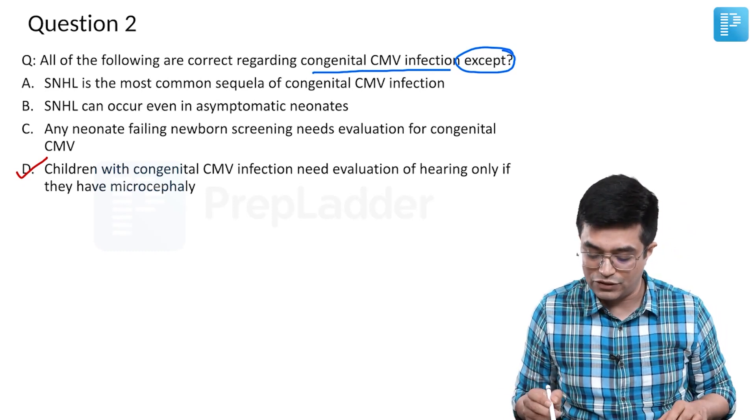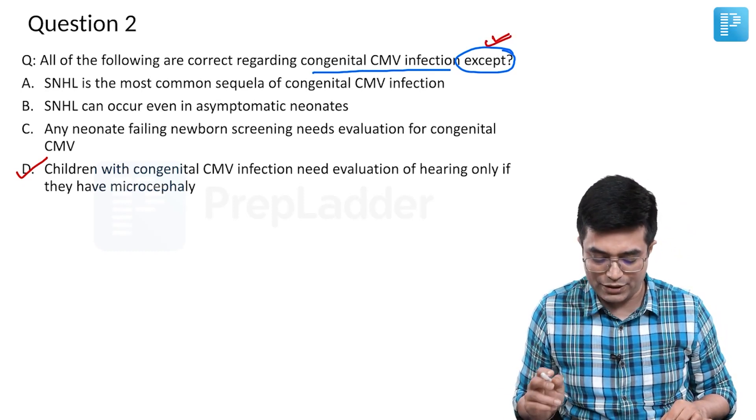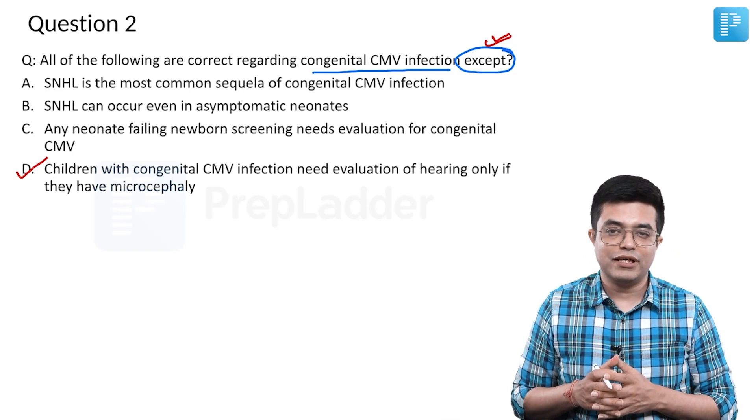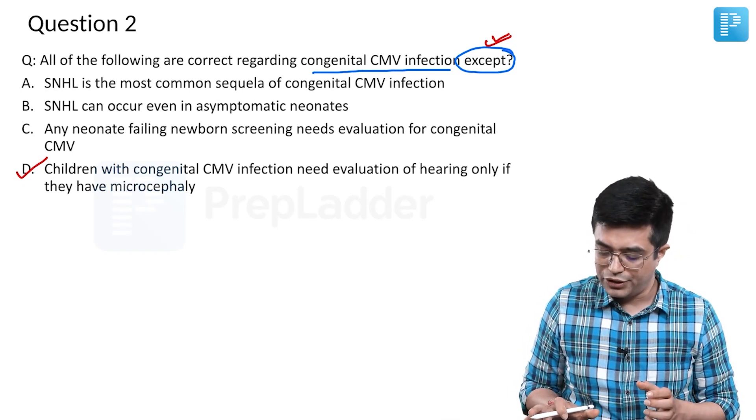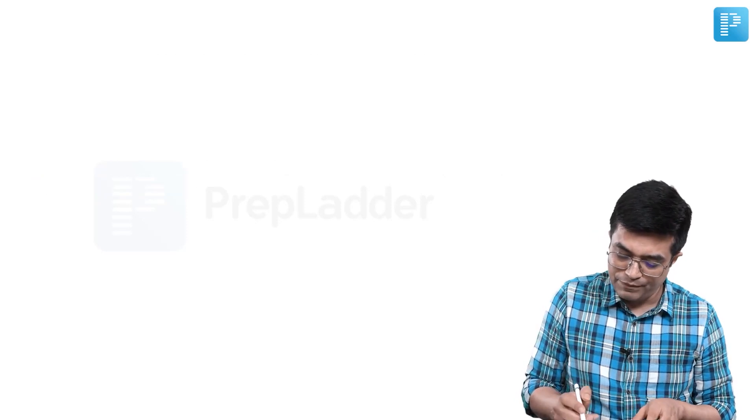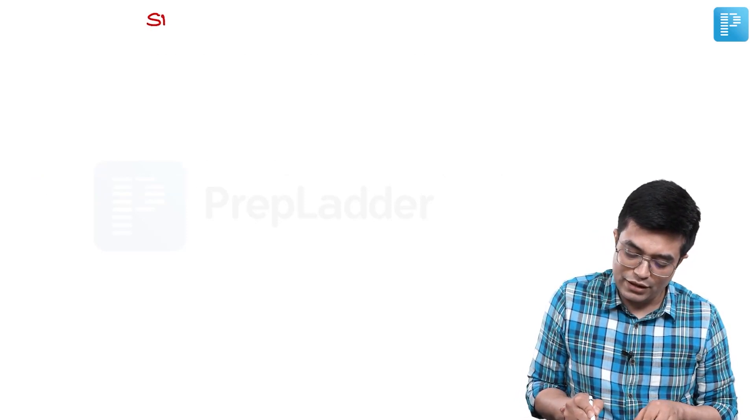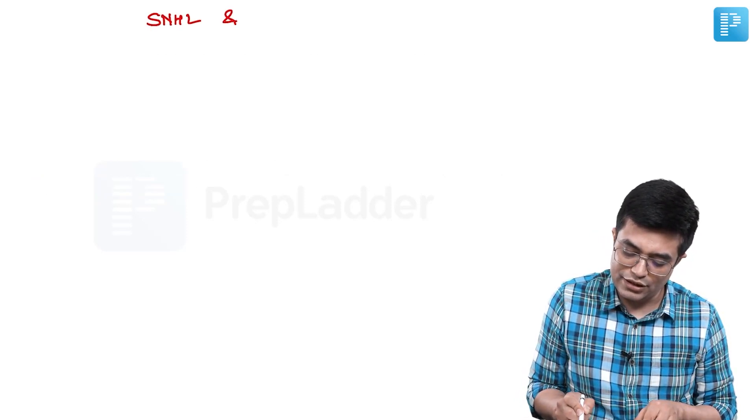That is the answer here because the question is asking all except. Now, what are the key points about congenital CMV which are mentioned in this question that you need to remember? According to Nelson as well as Cloherty, regarding sensory neural hearing loss and congenital CMV, what are the key points?